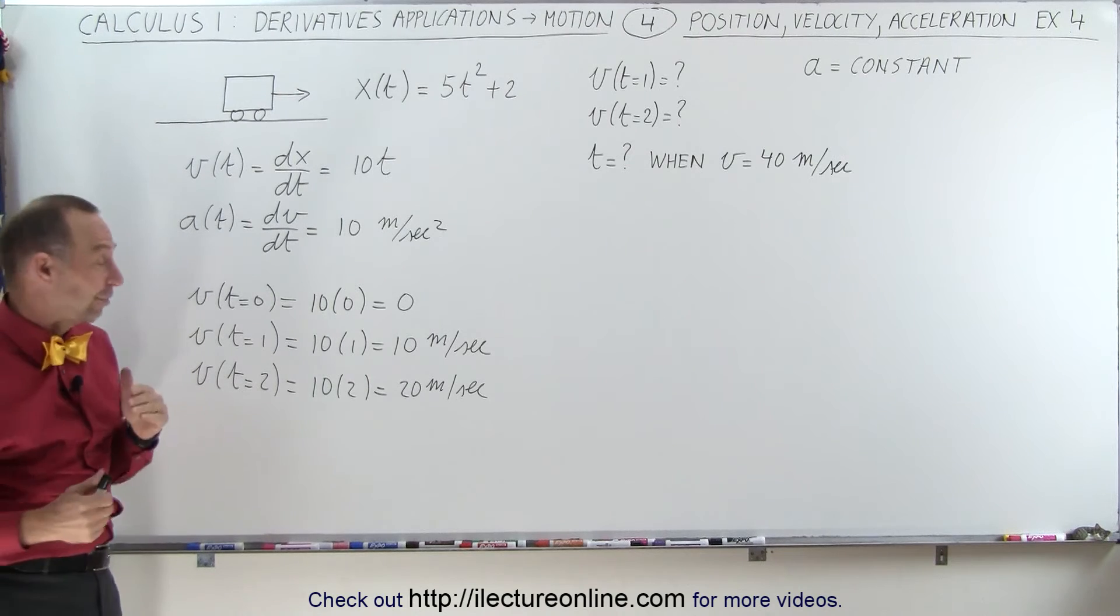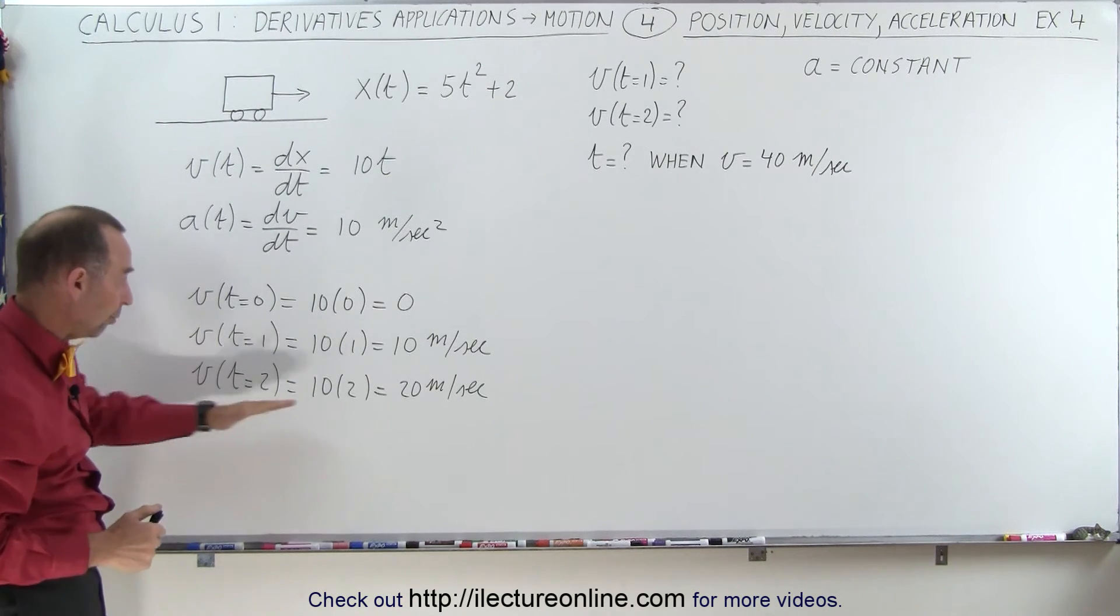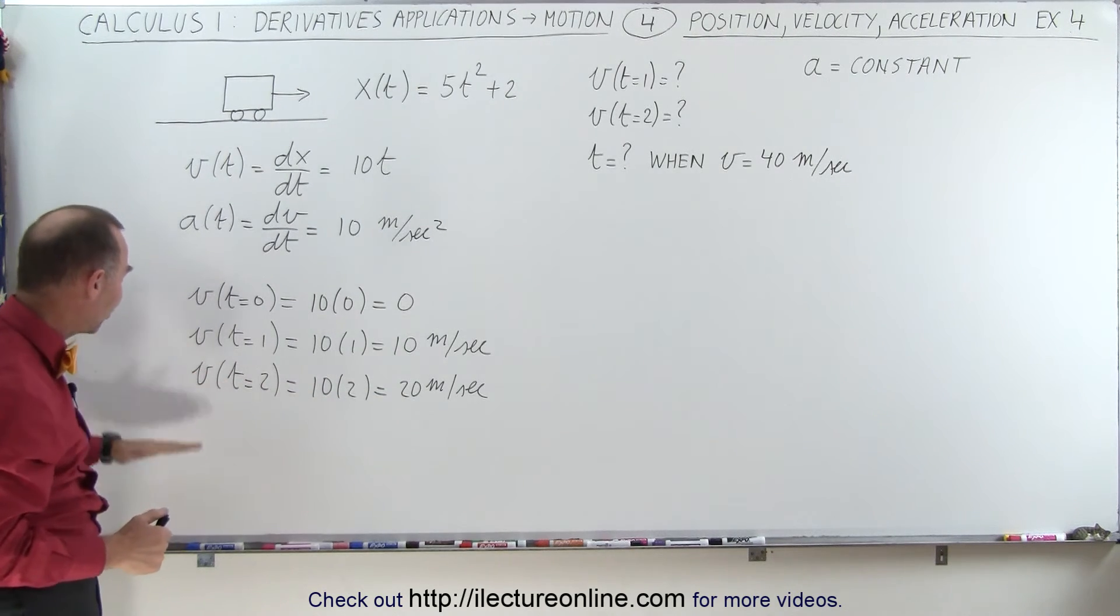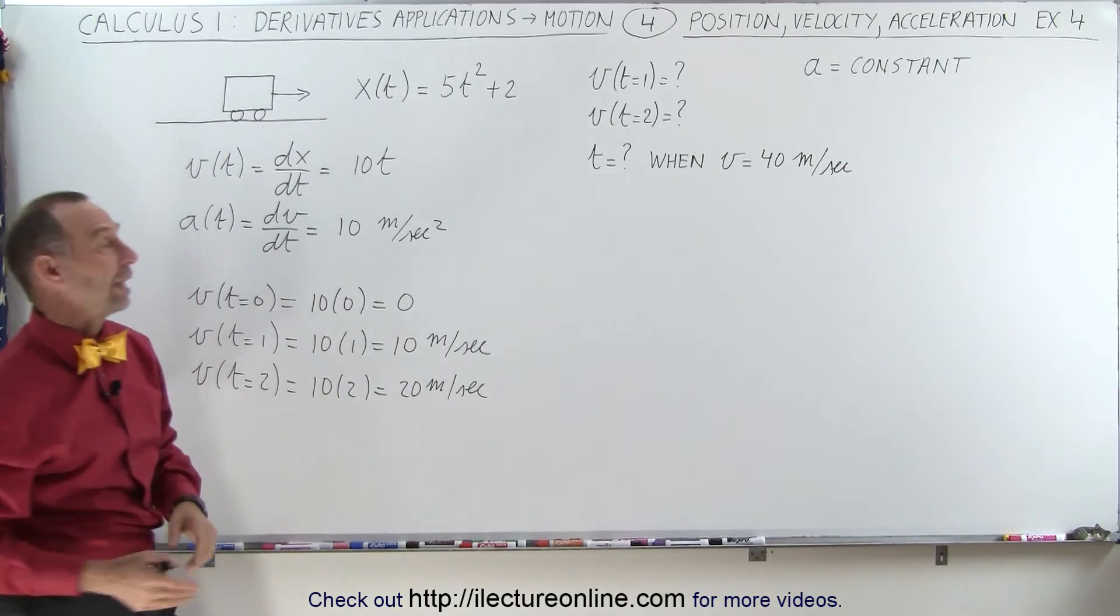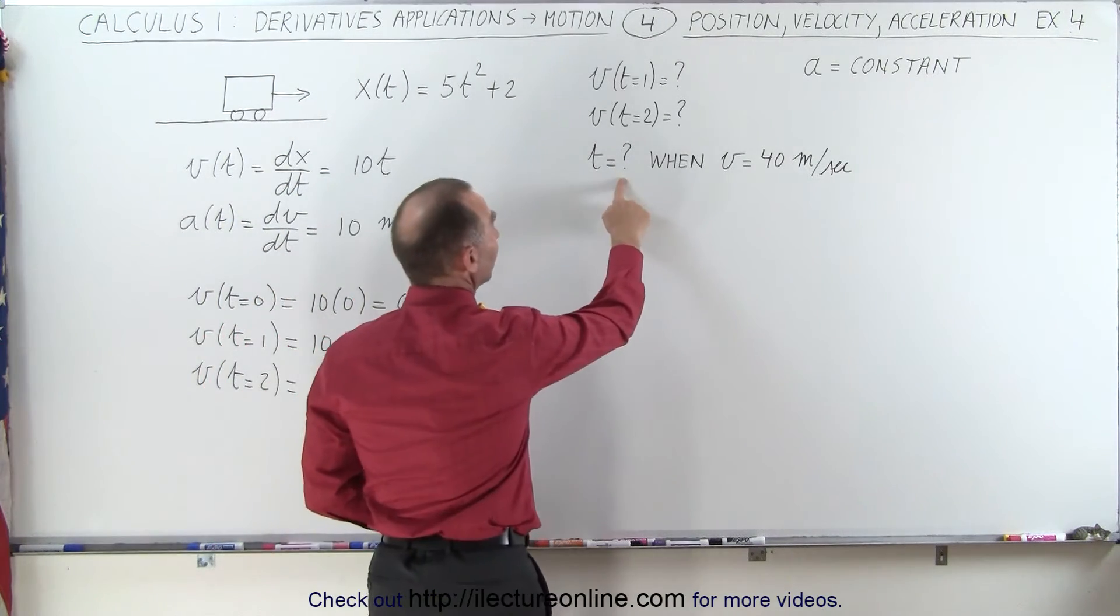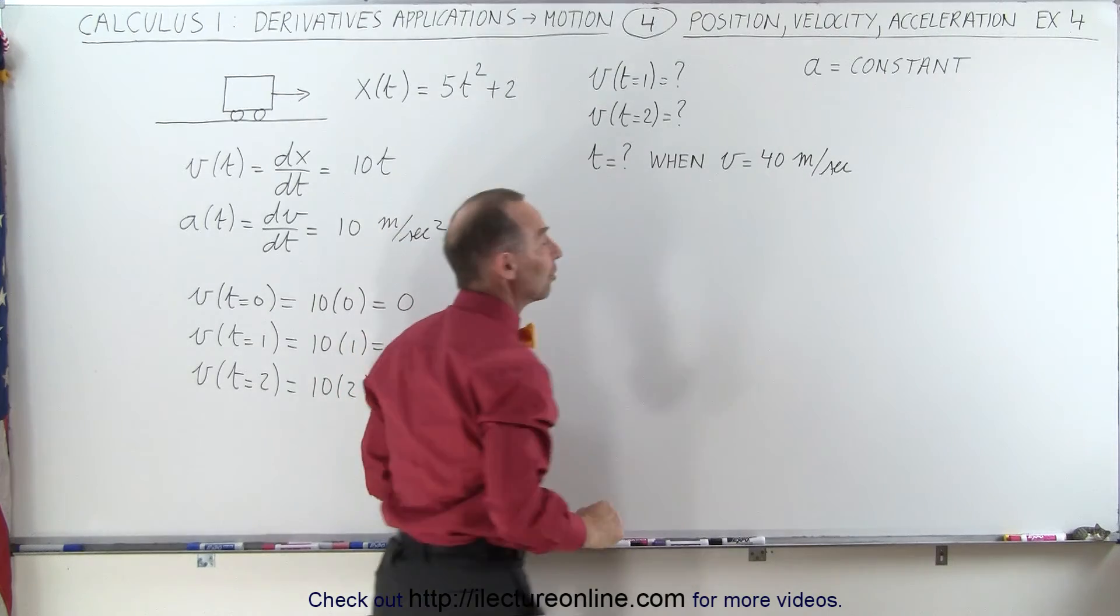Now, it doesn't take a lot to figure out that after 3 seconds, it will be going 30 meters per second. After 4 seconds, it will be going 40 meters per second. So the answer is, time will be 4 seconds when velocity is 40 meters per second.